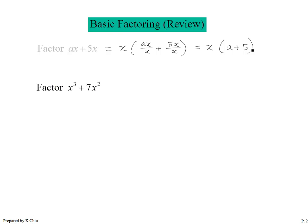Take a look at the next one. I have two terms here. I want to factor these two terms. Any common factor for these two terms? x squared — that's the GCF. So I am going to factor out the x squared, and then times what is the leftover: x cubed over x squared plus 7x squared over x squared. The leftover will always be the original terms divided by the GCF. Simplifying that gives us x squared times (x plus 7).